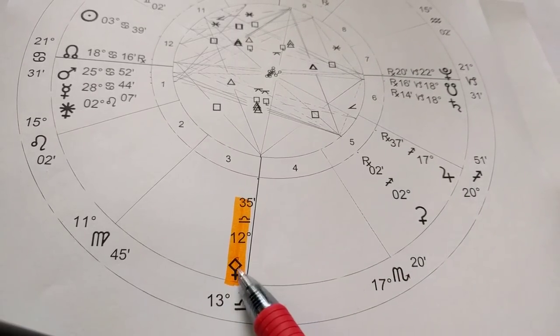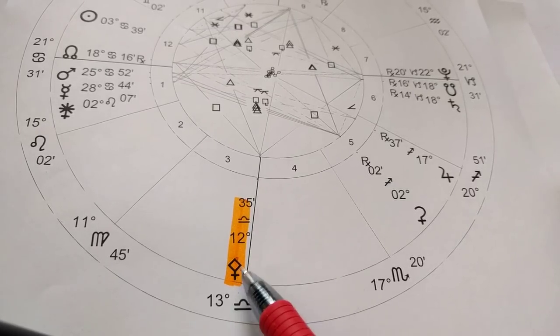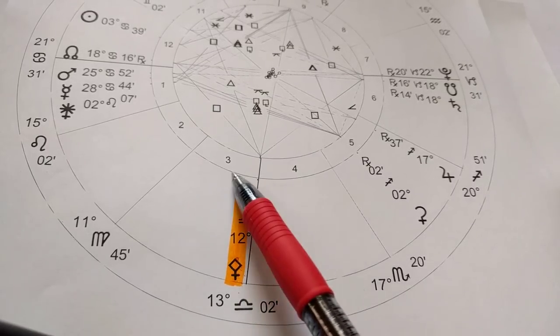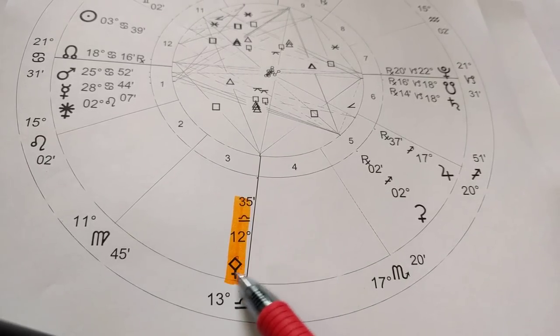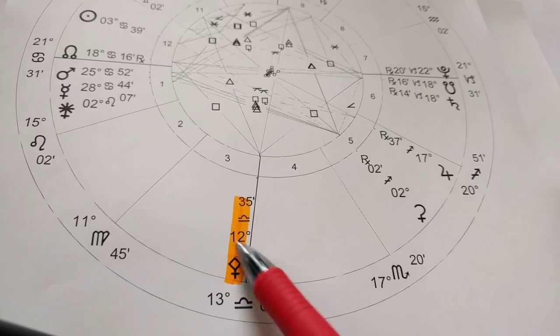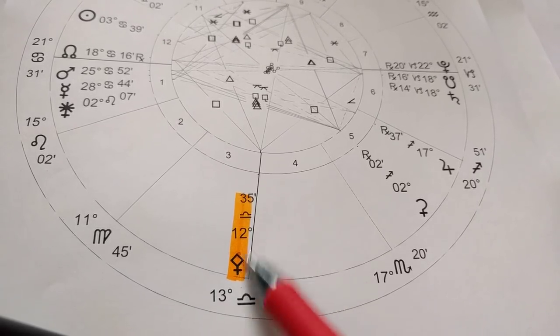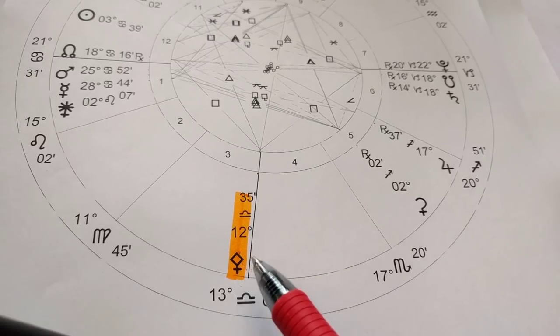So check out your natal chart to see where this energy shows up for you, where you have the gifts of Pallas Athena, especially depending on the astrological sign and the house that she's in, and spend some time with her. I feel like when we activate these asteroids, they start talking to us. They start talking to us and giving us messages about ourselves that we just weren't in touch with.